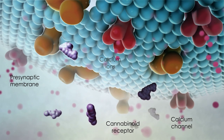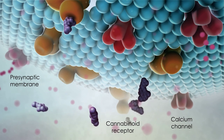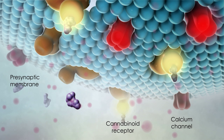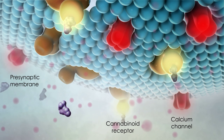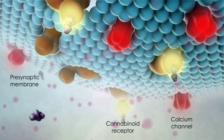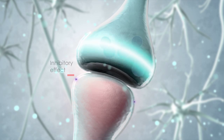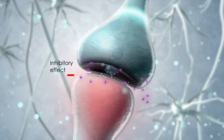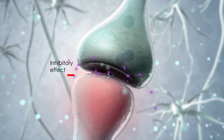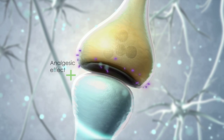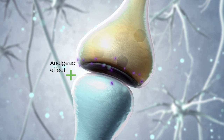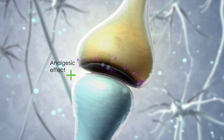Binding of the endogenous cannabinoids affects intracellular signal transduction pathways, reducing the influx of calcium ions into the presynaptic neuron, causing a decrease in further neurotransmitter release. This, in turn, influences the frequency of postsynaptic firing.